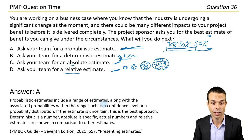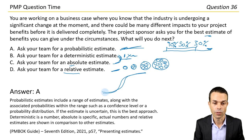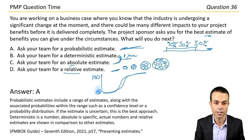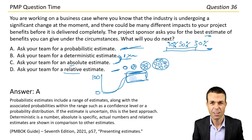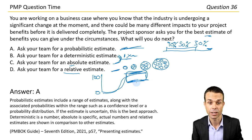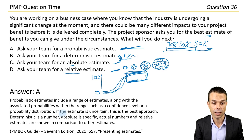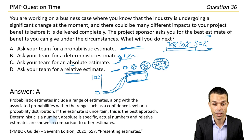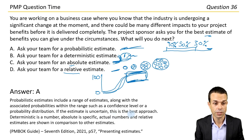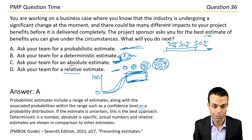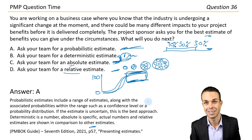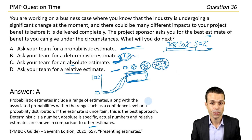Probabilistic estimates include a range of estimates along with associated probabilities within the range, such as a confidence level or a probability distribution — like a cumulative distribution where we get to 100% and at a certain stage we have the highest probability. Deterministic means a specific number. Absolute is also a specific number. Relative estimates are shown in comparison to other estimates. Page 57 under presenting estimates in the PMBOK Guide 7th edition.